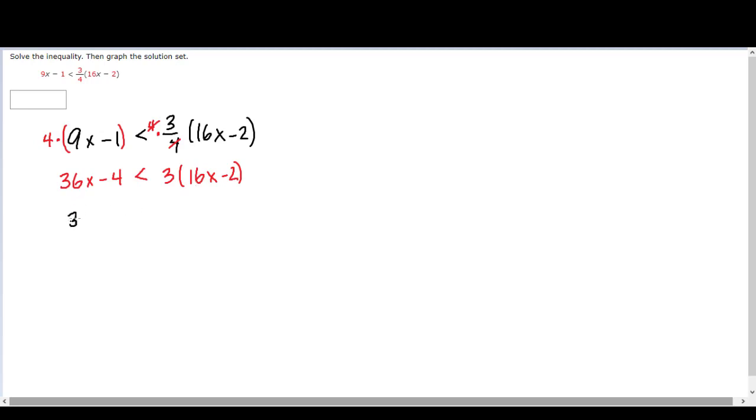So let's continue simplifying. The right-hand side is 3 times 16x, 48x, and then 3 times negative 2 is minus 6. Now we're going to subtract 48x from both sides,